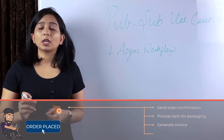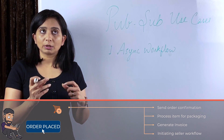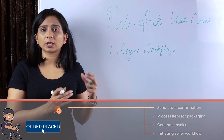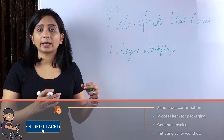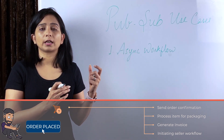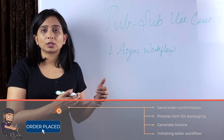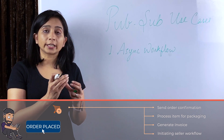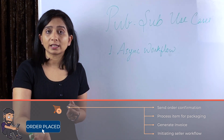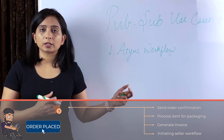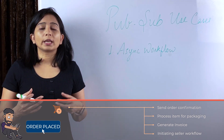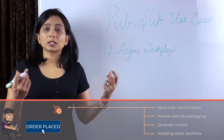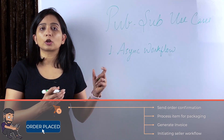There also has to be a communication to the operations team or vendors — for example, connecting to a particular seller to notify them that an order has been placed and a certain payment has to be made to that seller. Amazon is a platform where sellers sell their products, so when a product is purchased, a certain amount of money goes to that seller and it is the platform's responsibility to handle that workflow.